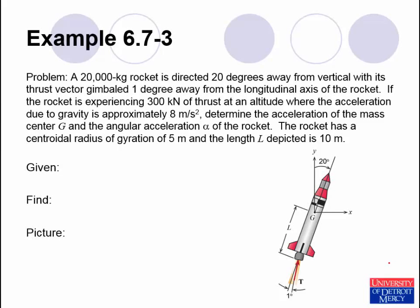This is Example 6.7-3 from the textbook Conceptual Dynamics. The problem statement reads: a 20,000 kg rocket is directed 20 degrees away from vertical with its thrust vector gimballed 1 degree away from the longitudinal axis of the rocket. If the rocket is experiencing 300 kN of thrust at an altitude where acceleration due to gravity is approximately 8 m/s², determine the acceleration of the mass center G and the angular acceleration alpha. The rocket has a centroidal radius of gyration of 5 meters and the length L depicted is 10 meters.